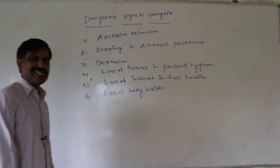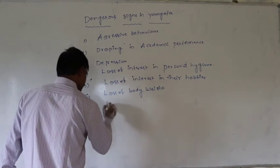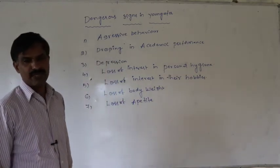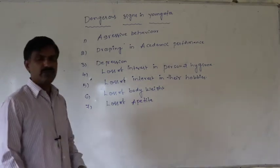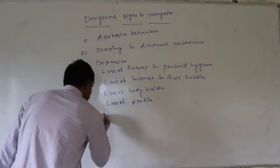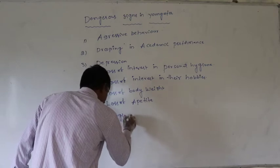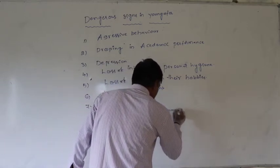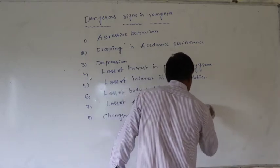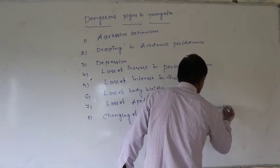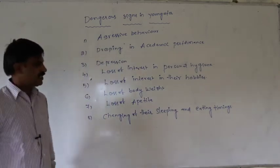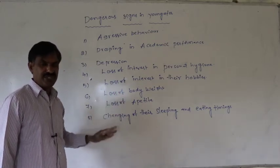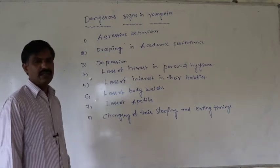Loss of appetite — their body weight decreases and they lose hunger, that is the loss of appetite. Again, changing of their sleeping and eating timings. Persons who may be attracted towards TDA abuse have their sleeping as well as eating timings changed.